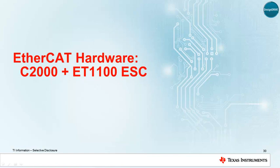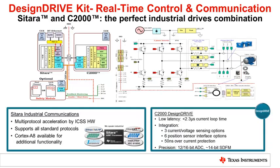In addition to the EtherCAT slave controller described in the previous slide, a fully featured EtherCAT slave node is often paired with an MCU to run the slave stack, operate peripherals, and capture inputs. TI has developed a daughter card that, coupled with the C2000 MCU, greatly simplifies the construction of an EtherCAT slave. This figure is a high-level block diagram of the Design Drive Industrial Design Drive Kit, also known as the IDDK.